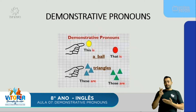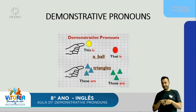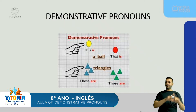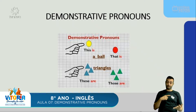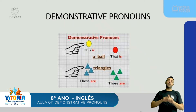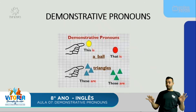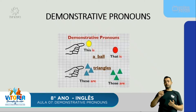Na próxima imagem, temos os triangles: os blue triangles e os green triangles. Os blue triangles estão próximos da pessoa que fala e estão no plural. O demonstrative pronoun correto é 'these' — 'These are triangles', esses são triângulos. Já os green triangles estão distantes da pessoa que fala, então iremos utilizar o 'those' — 'Those are triangles', esses são triângulos.